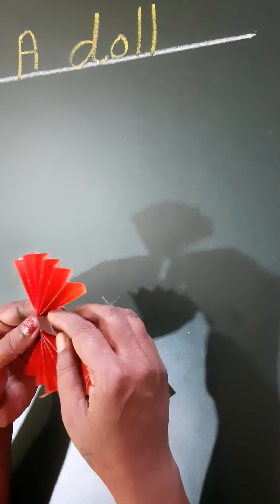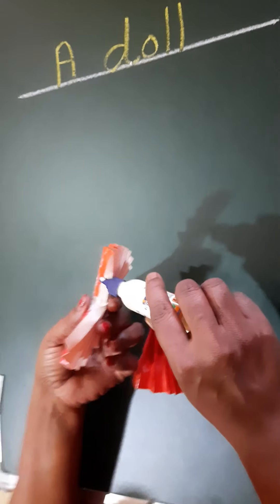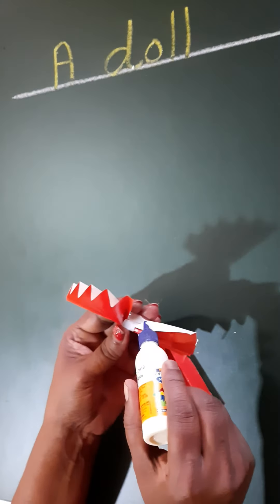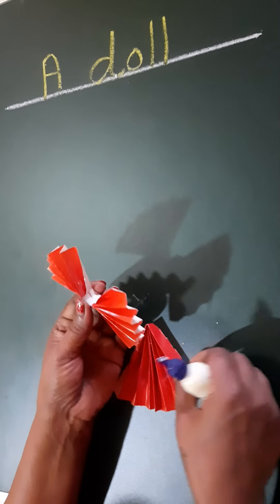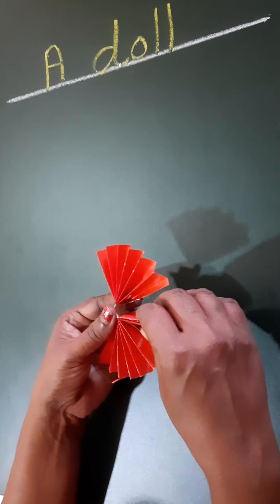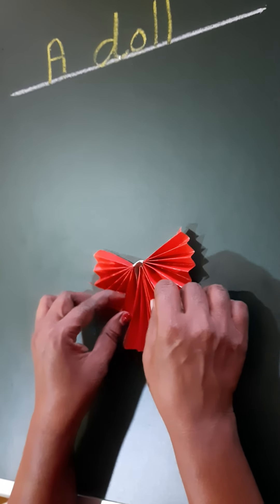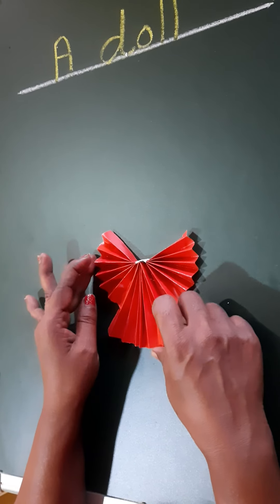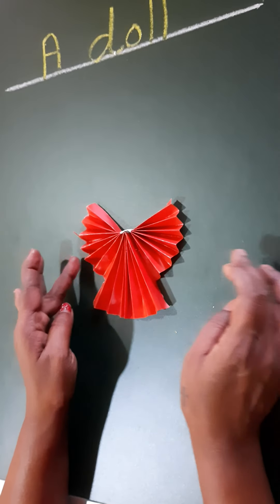After that, you apply gum here. And then apply gum this side. And fix this part tightly to this paper. So this is already fixed.